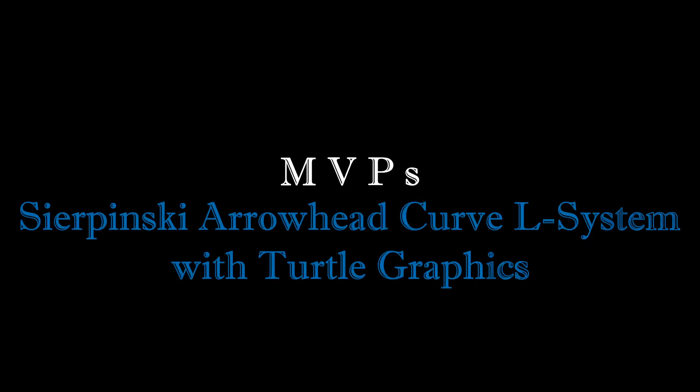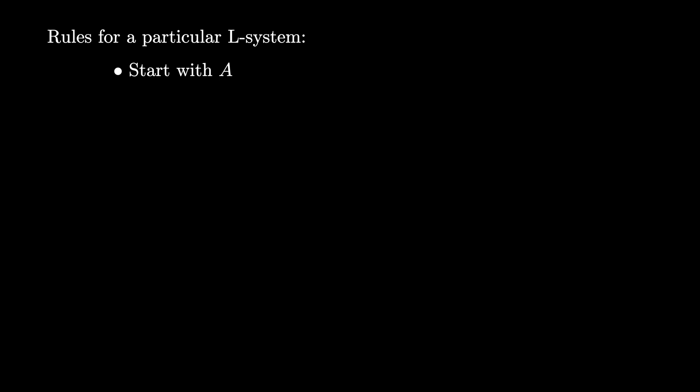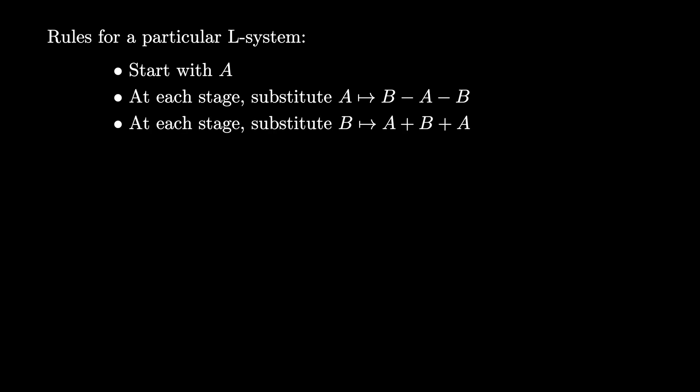Here's a fascinating way to approximate the Sierpinski triangle with a single curve in the plane. Let's consider a relatively simple Lindenmayer system. We start with the string A, and the production rules tell us that at each stage we replace A by B dash A dash B, and we replace B with A plus B plus A, and we will let dashes and pluses stay the same at each stage.